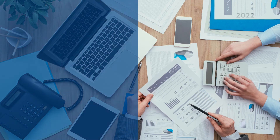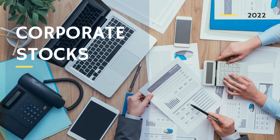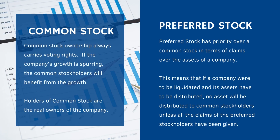There are two common types of corporate stocks: common and preferred stock. Common stock ownership always carries voting rights. The nature of those rights and the specific issues shareholders are entitled to vote on can vary considerably from one company to another. If the company's growth is strong, the common stockholders will benefit from that growth. Holders of common stock are the real owners of the company.